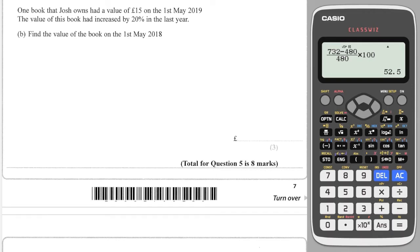Our next question is a classic reverse percentages. It says that he owns a book that had a value of £15 in 2019. The value of the book had increased by 20% in the last year. Work out the value of the book a year ago. So the old value of the book a year ago we'll call x, and that was multiplied by a 20% increase which is timesing by 1.2, and that equals the new price which is £15.